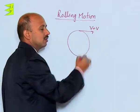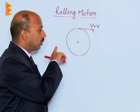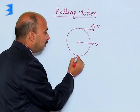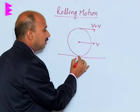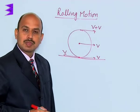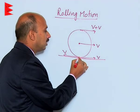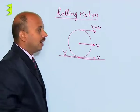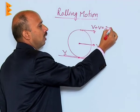Here V plus V gives us the top point velocity. This point, which in translational motion was V and in rotational motion was also V, combines at the top. At the point of contact placed on the ground, the velocity due to translational motion was V and due to rotational motion it was V in the opposite direction.